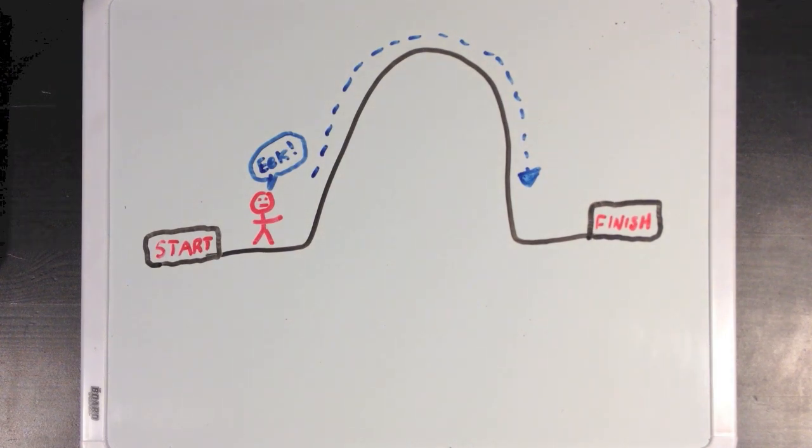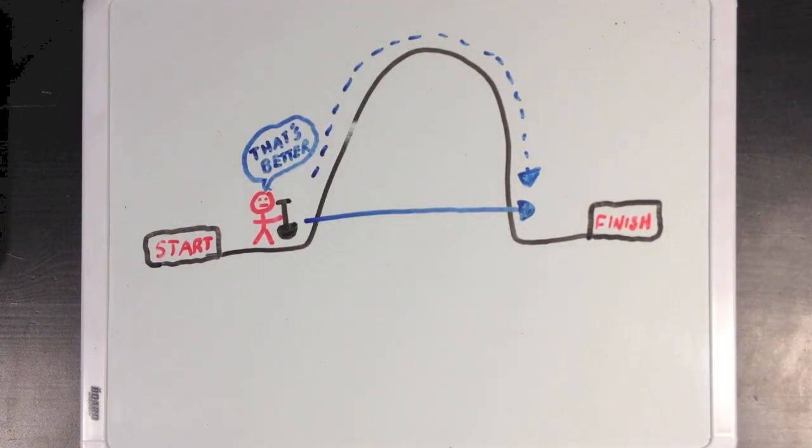But if I were to give you a shovel, then now you could dig your way through the mountain and not have to climb up so high. In this example, the shovel represents an enzyme, and the hill represents the activation energy barrier that prevents you from getting to start to finish. By using the shovel, you're able to lower the height of the hill you have to climb. But in both cases, it's important to recognize that you still started and finished at the same points.